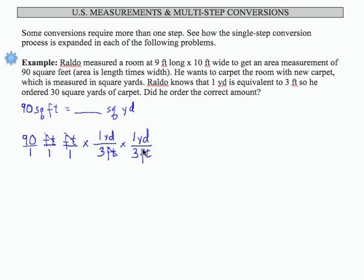So there go my feet, and what I have is 90. If I multiply across, 90 times 1 times 1 is 90, over 3 times 3 which is 9, and my units are square yards. So if I divide 90 by 9, I get 10 square yards.